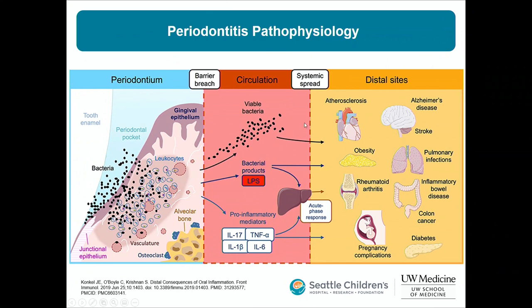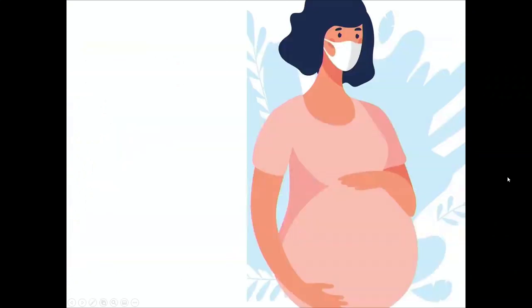Periodontal disease or periodontitis is associated with adverse outcomes in multiple organ systems, including atherosclerosis, stroke, colon cancer, increased risk for diabetes, and obesity. Today we're going to speak specifically about pregnancy outcomes.